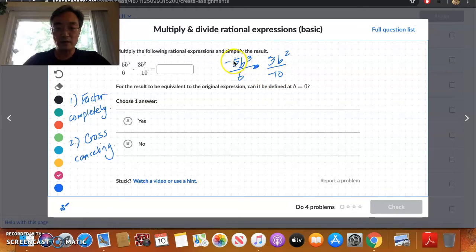However, if we cross-cancel this, 5 goes into 10 twice, right? So negative 5 goes into itself once, and negative 5 goes into negative 10 twice. Likewise, using cross-canceling, 3 goes into itself once, 3 goes into 6 twice. And I think that's it, that's all you can cross-cancel. And now we just multiply across.